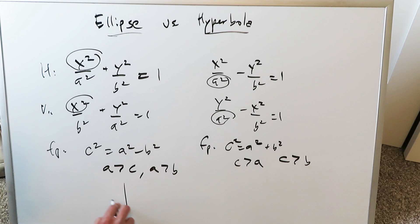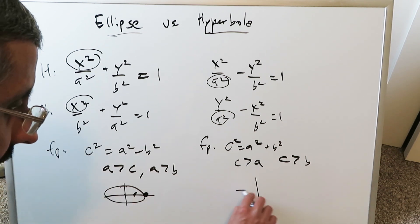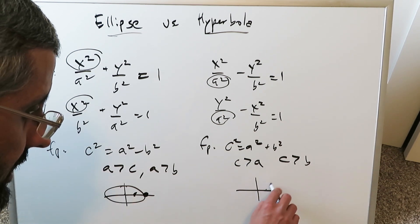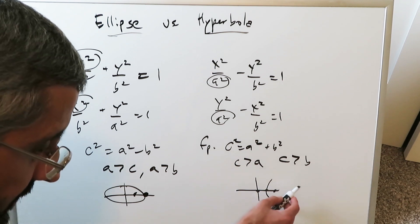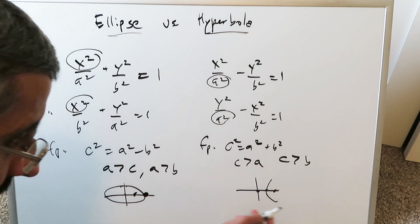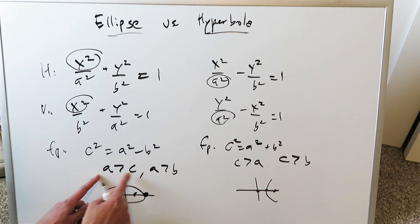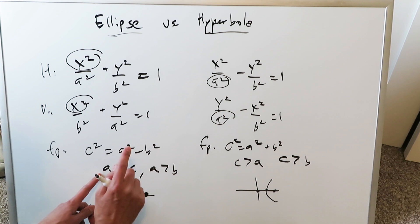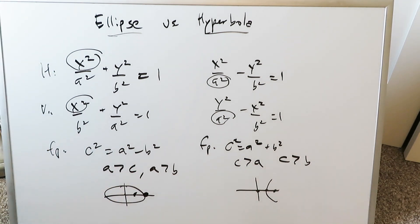If you're looking at an ellipse, here's your vertex, but here's your focal point — it's located closer to the center. If you're looking at a hyperbola, here's your vertex, here's your center, but the focal point is further away from the center. Clear differences have to be remembered: a is larger than c, a is larger than b for the ellipse; c is larger than a, c is larger than b for the hyperbola.